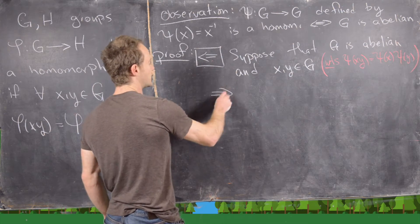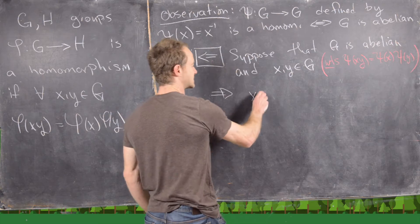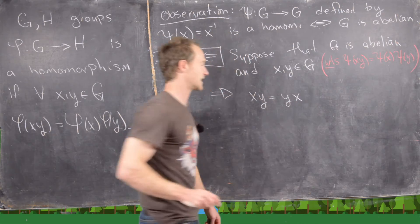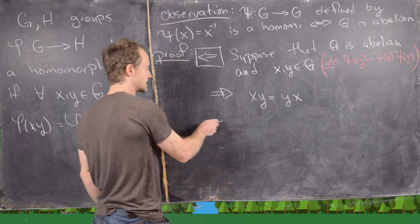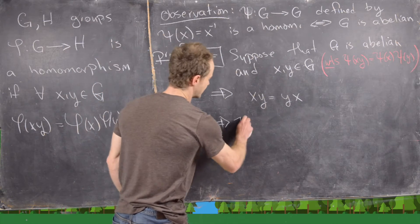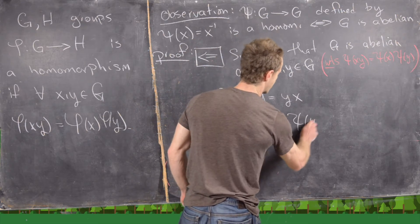But what we'll first use is the fact that G is abelian to write that x times y equals y times x. Now let's go ahead and apply psi to both sides of this. So that will give us psi of xy equals psi of yx.